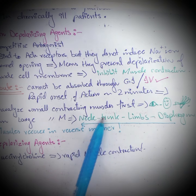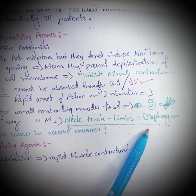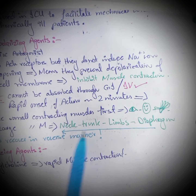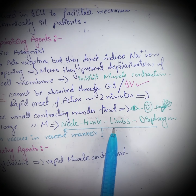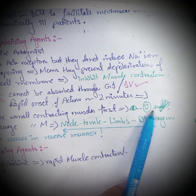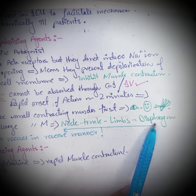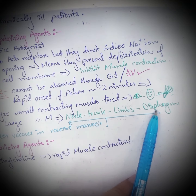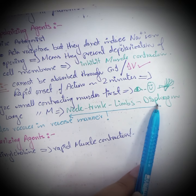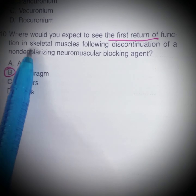After the small muscles, large muscles are paralyzed — the neck, trunk, limbs, and diaphragm. However, muscle recovery occurs in the opposite order: the diaphragm recovers first, followed by the limbs, trunk, and neck.